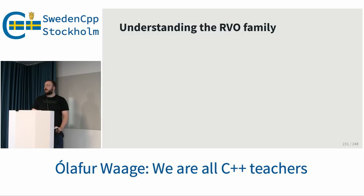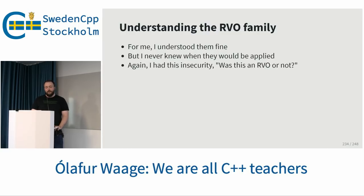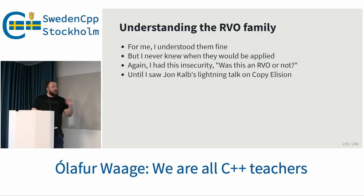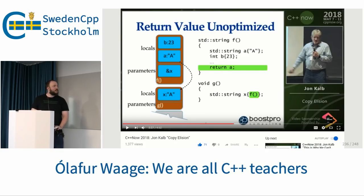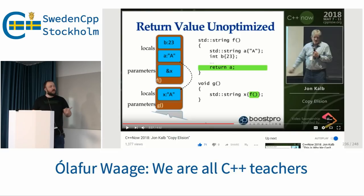RVO — we're back to pointers. For me, I understood them fine, but I never knew when they applied. I feel okay with this thing, but I have to go to Compiler Explorer and make sure this is actually RVO. What's RVO, what's not RVO? I saw Jon Kalb's lightning talk on copy elision. Look at the boxes and arrows. It's four minutes and 52 seconds — this is a call to action, I'm not going to spoil the talk. This is your homework: go watch that talk, it changed how I thought about copy elision. CppNow 2018, Jon Kalb, Copy Elision. It's a wonderful talk, and short.